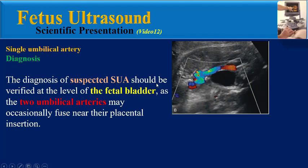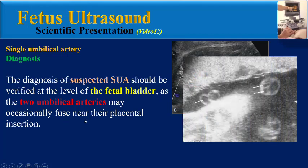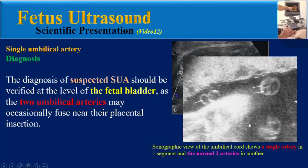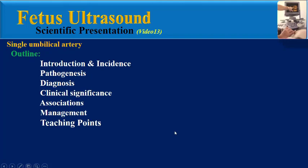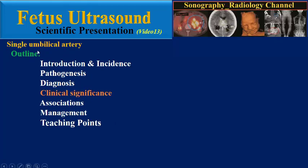Documentation of an absent intra-abdominal segment of one umbilical artery can confirm the diagnosis. The diagnosis of suspected single umbilical artery should be verified at the level of the fetal bladder, as the two umbilical arteries may occasionally fuse near their placental insertion. As seen in this sonographic view, the umbilical cord shows a single artery in one segment and the normal two arteries in another segment. The bladder approach also objectively identifies whether the left or right umbilical artery is absent.